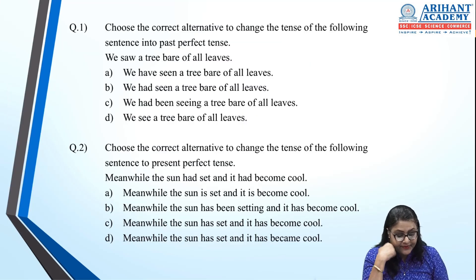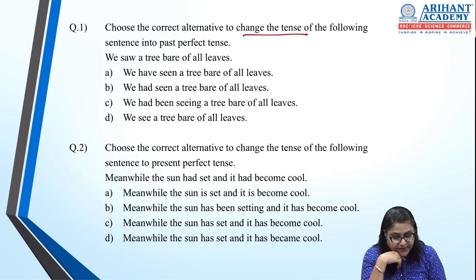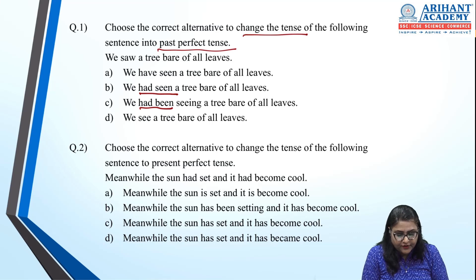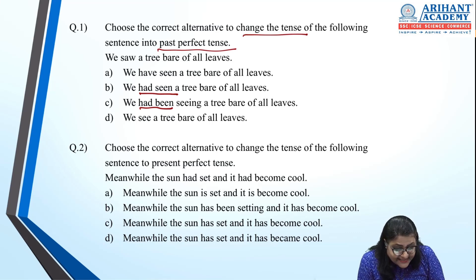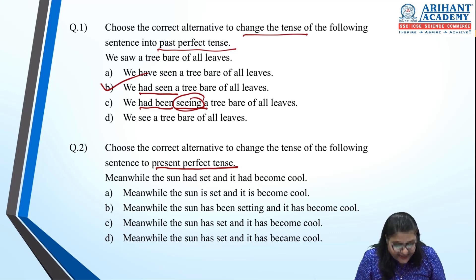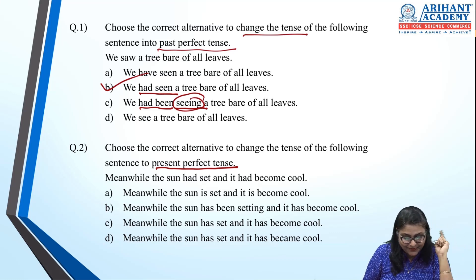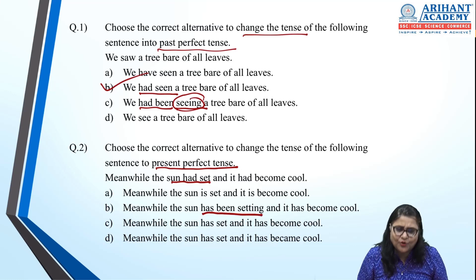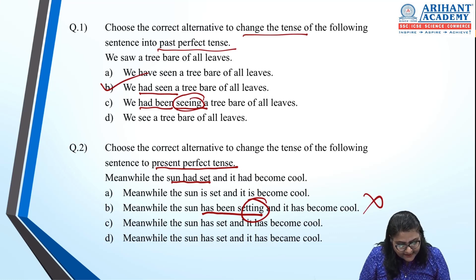Let's solve tense MCQs. First: change to past perfect tense — past perfect means 'had' plus past participle. Looking for 'had': option B 'we had seen a tree' is correct, not 'had been seen' which adds unwanted '-ing'. Next: change to present perfect — 'has' or 'have' plus past participle. 'The sun had set' changes to 'the sun has set and it has become cool' — option C is correct.